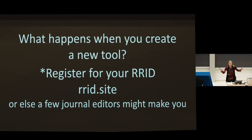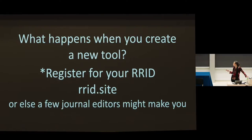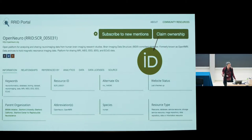All of you — or a good chunk of you — have tools that you've created. If you create a new tool, remarkably enough, you can actually register for an RRID. All you have to do is either go to RRID.site, or just type RRID into your favorite Google browser. If you are actually trying to publish with a few journals, there are a few journal editors that might make you do this. Most won't make you do this, but I would highly recommend it.